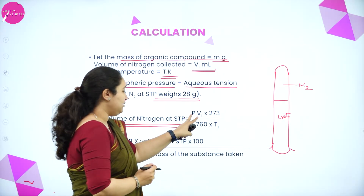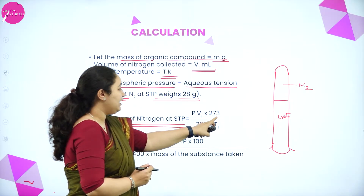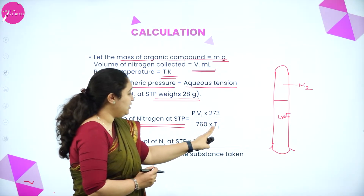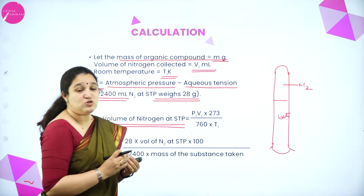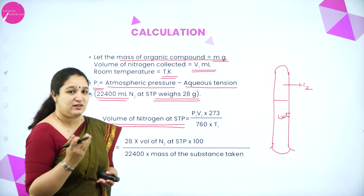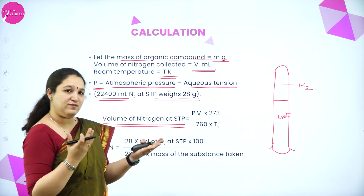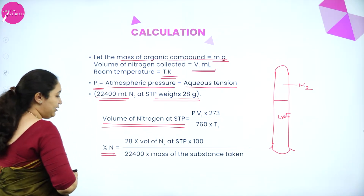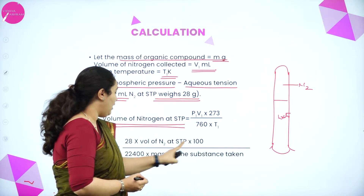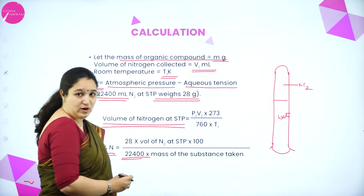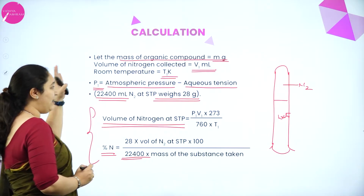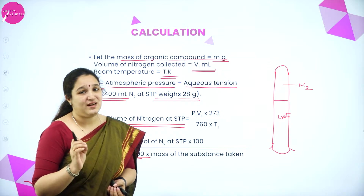We are using the formula P1V1/T1 = P2V2/T2, calculating the volume of nitrogen by comparing it with standard conditions. Next, percentage of nitrogen = 28 × (volume of nitrogen at STP) × 100 divided by 22,400 × (mass of organic compound). If you know these two formulas and have all the data, you can calculate the percentage of nitrogen.